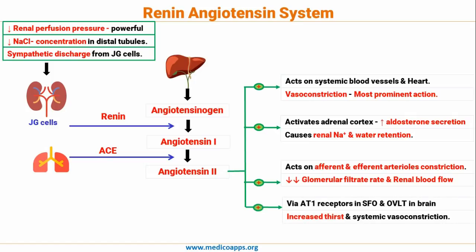Finally, via AT1 receptors in the SFO and OVLT — the subfornical organ and organum vasculosum of the lamina terminalis — angiotensin 2 causes increased thirst and systemic vasoconstriction. These AT1 receptors in the SFO and OVLT in the brain have gained a lot of importance in recent years, as they contribute to overall fluid balance via hormone regulation and also regulate appetite to a certain extent.